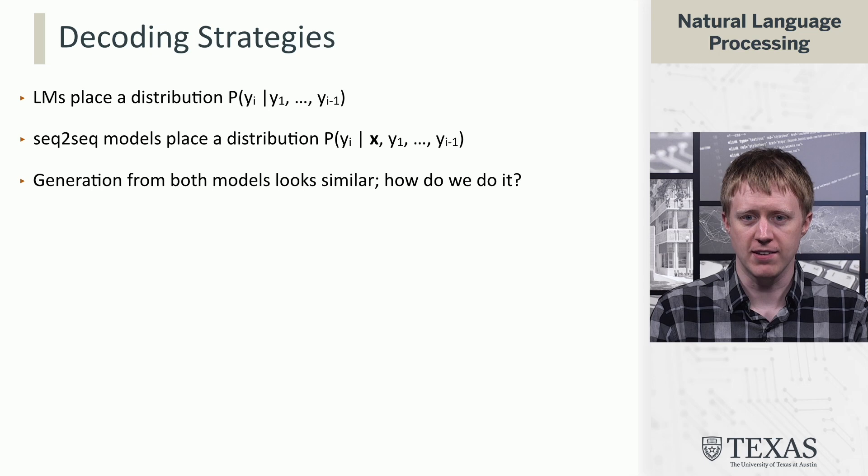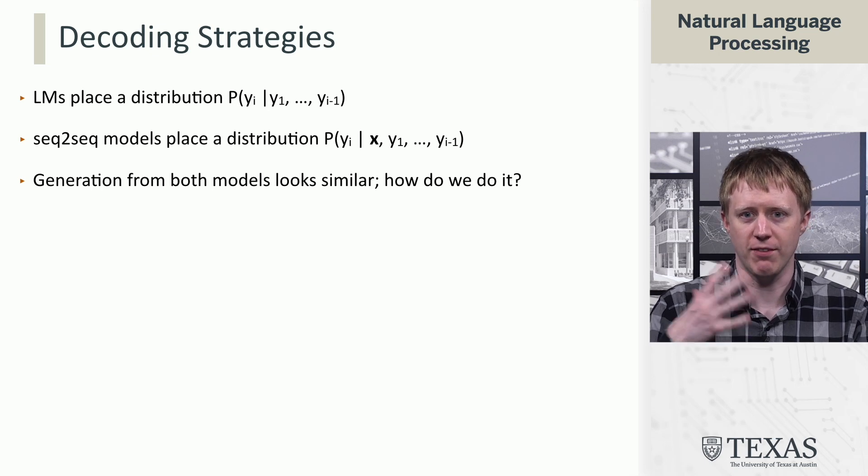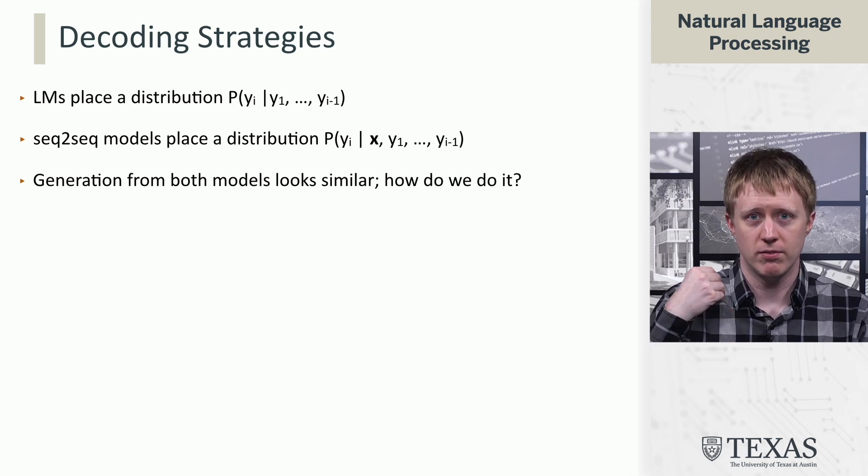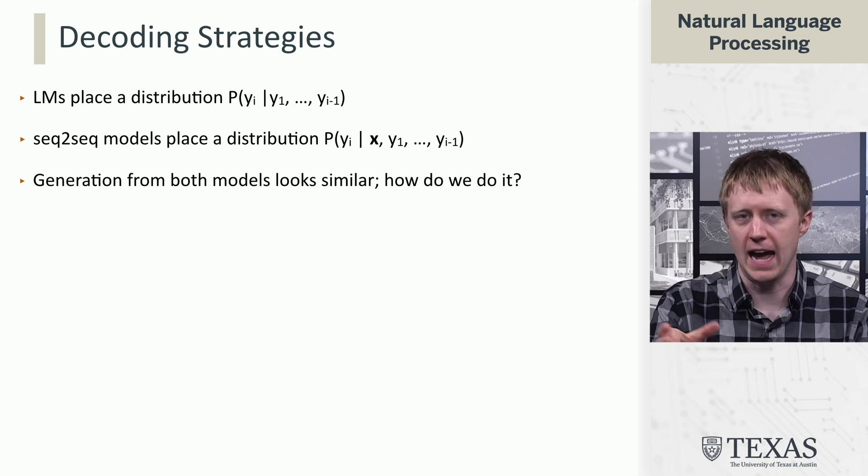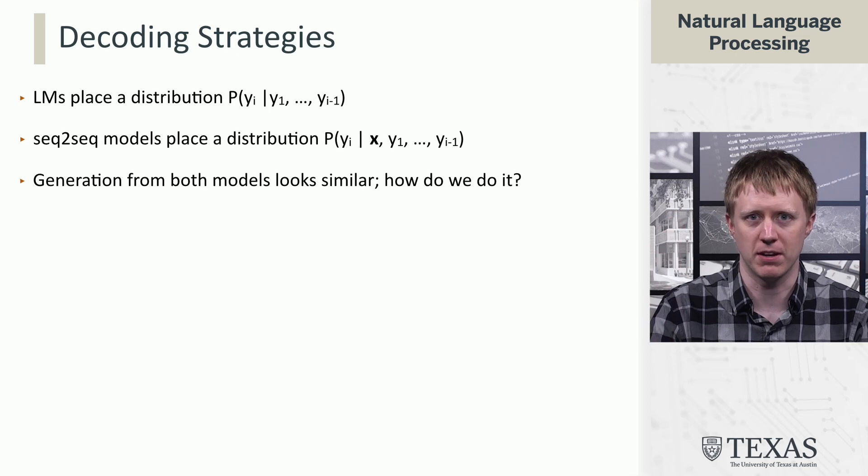In both of these cases, at the end of the day we have this model, and we give the system some input—either a prefix of y's or an x, or we just want it to straight up generate a story or generate something for us. So how do we actually do this generation?